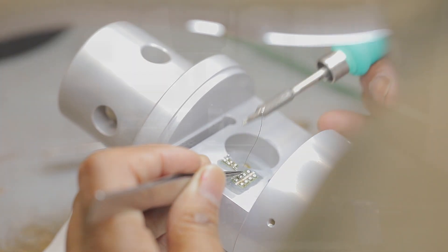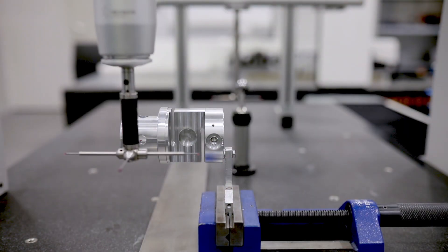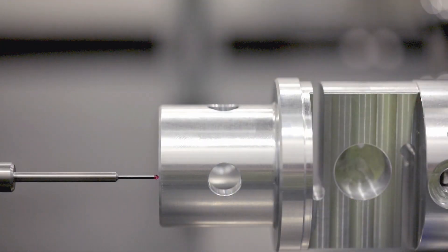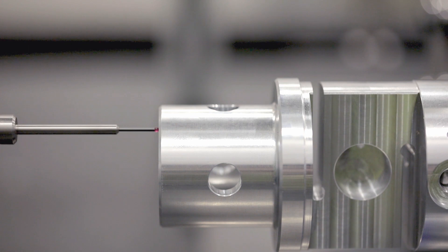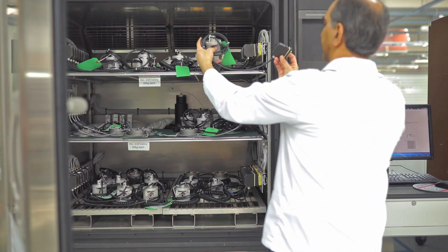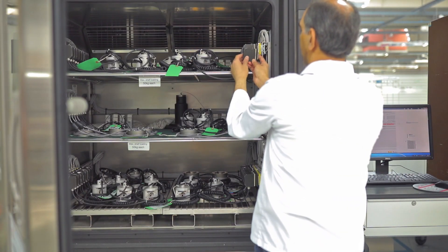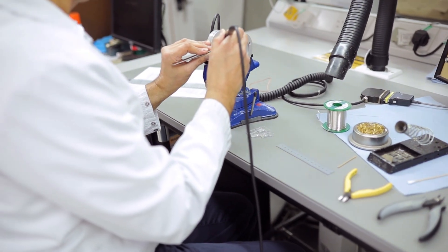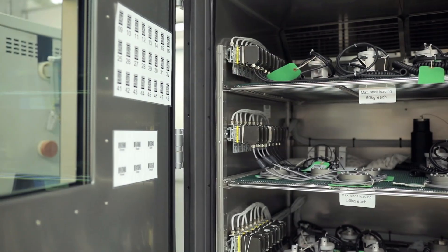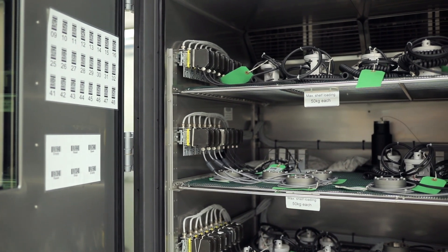All Instron load cells are subjected to a thorough test and verification procedure including temperature compensation. Our load cells are tested in our ovens and then adjusted as necessary. Afterwards, the load cells are then retested in the ovens to ensure compliance with our specifications.